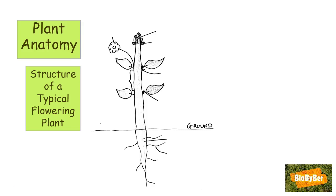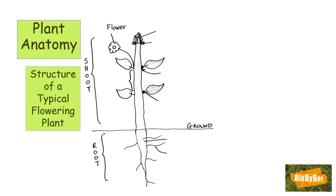From a biology point of view, individuals are made of organ systems. In a plant's body, the first organ system is the shoot system — basically everything above the ground. The other organ system is the root system. Looking at the shoot system, we can see it is composed of organs. The first organ is the flower, used for reproduction.